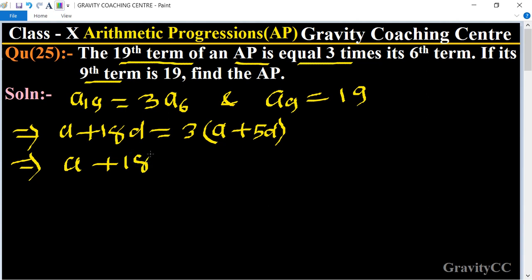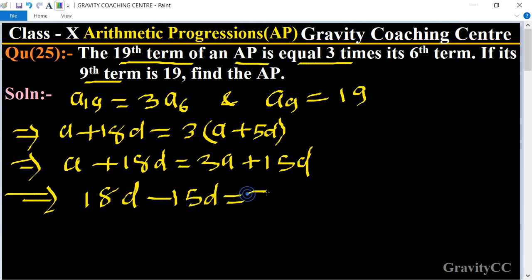This implies that 18d minus 15d equals 3a minus a, which implies that 3d equals 2a.